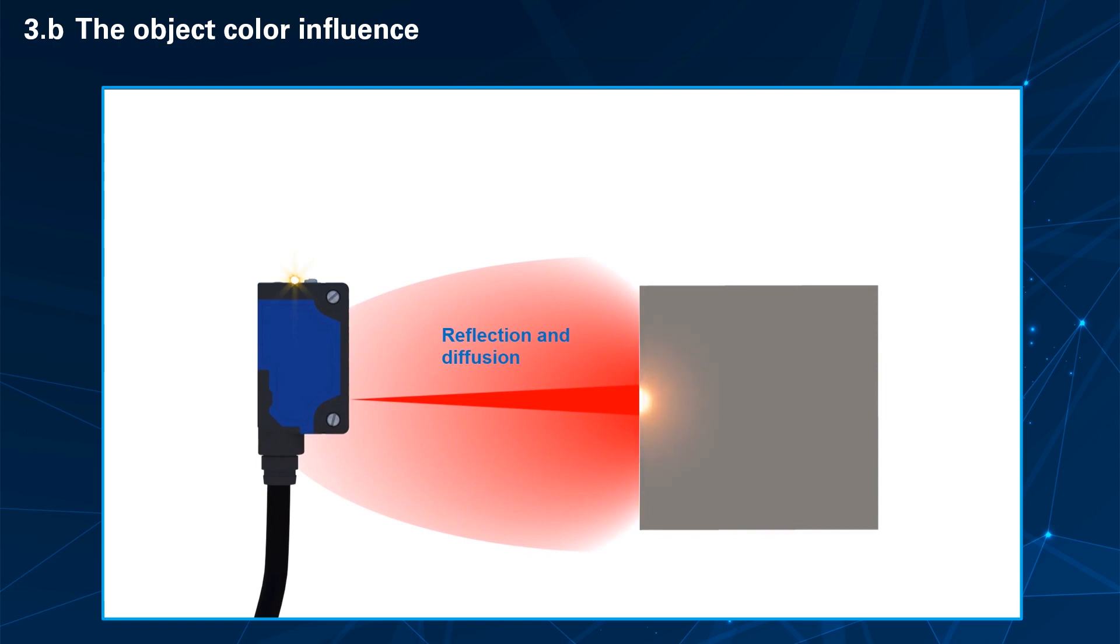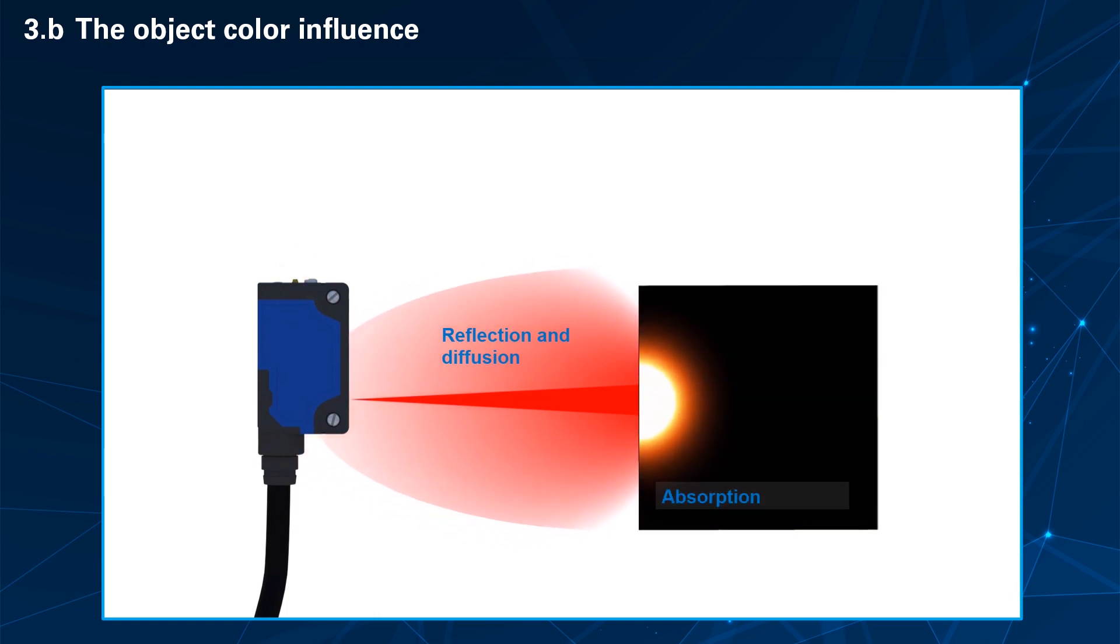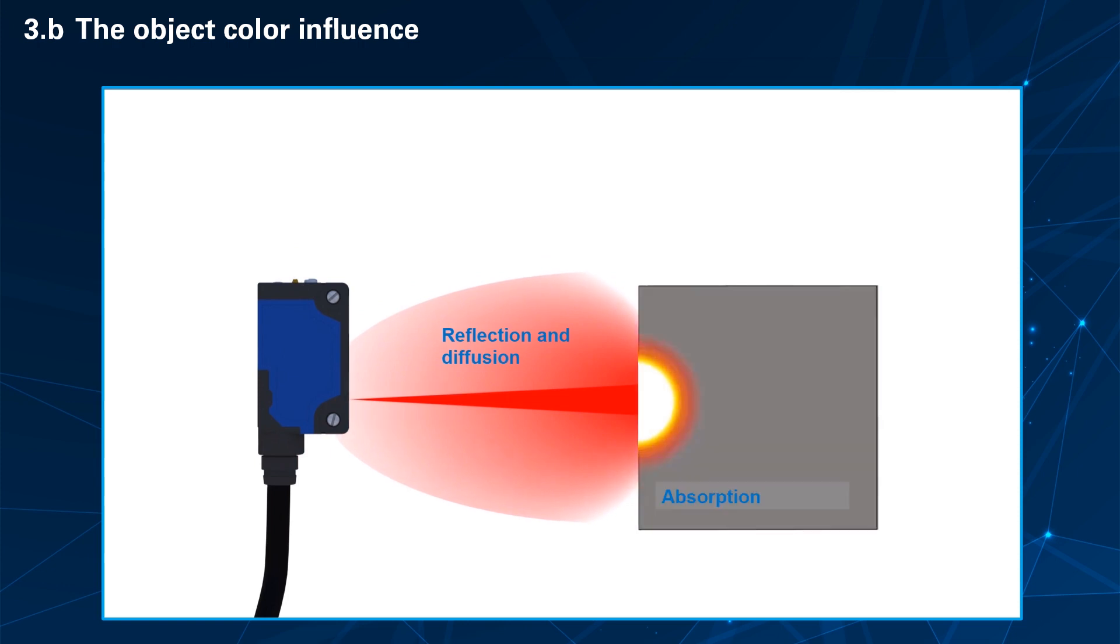One part of the light energy can be absorbed. The energy is transformed into heat, for instance. A black matte object absorbs more energy than a white one.